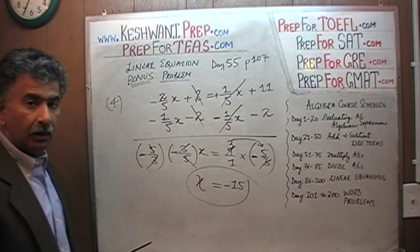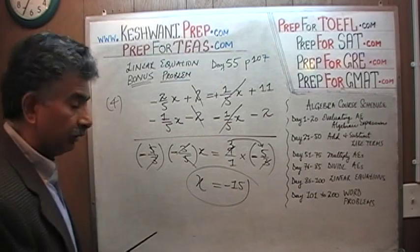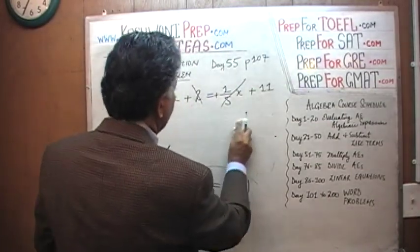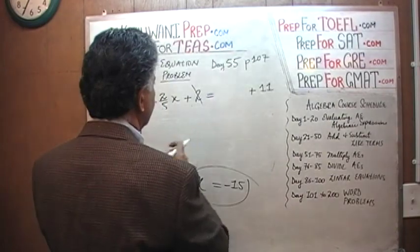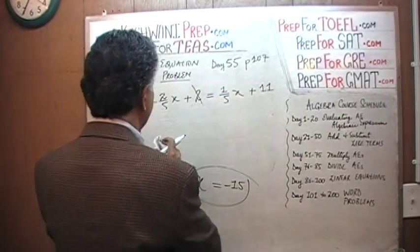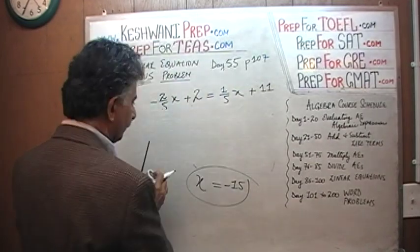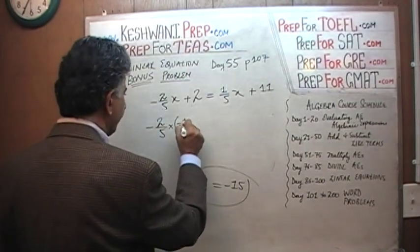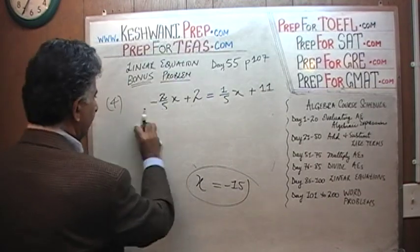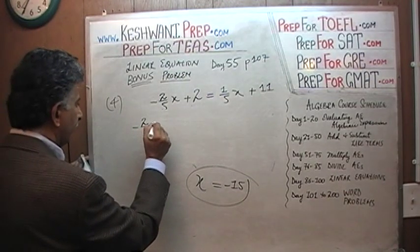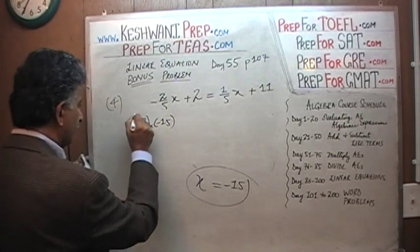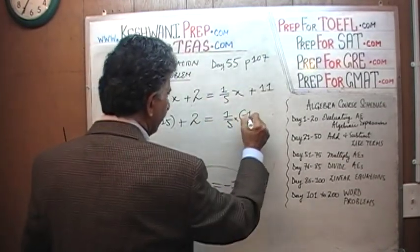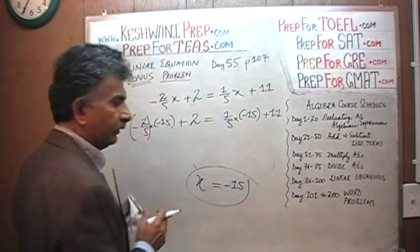We need the room so we have to erase it. Remember x equals to negative 15 is what we're trying to prove, is what we're trying to ascertain because that's what we're claiming. We want to make sure that our claim is correct. So negative 2 over 5 times negative 15 plus 2 equals 1 over 5 times negative 15 plus 11. Let's see what happens, shall we?